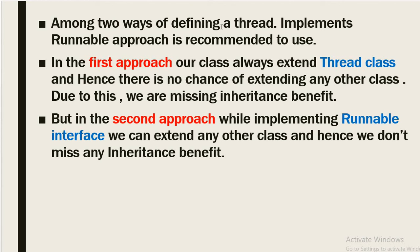Among the two ways of defining a thread, the implement Runnable approach is recommended. In the first approach, our class always extends the Thread class, and hence there is no chance of extending any other class — we miss the inheritance benefit, because Java does not support multiple inheritance. But in the second approach, while implementing Runnable interface, we can extend any other class and hence we do not miss any inheritance benefit. So we must go with the second approach and create a thread by implementing Runnable interface.